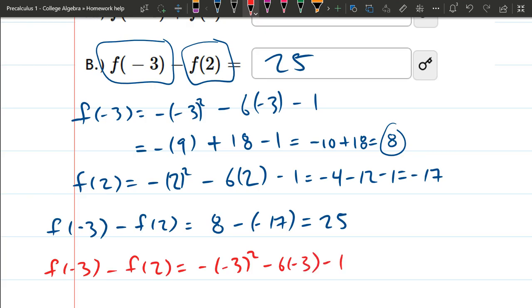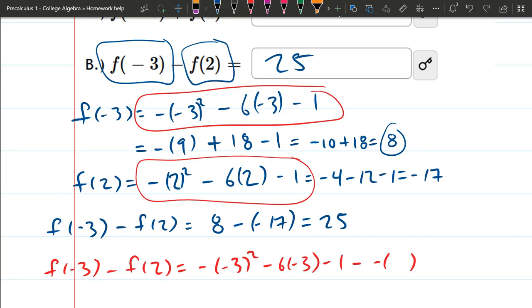So that is f of negative three. Now I'm going to go minus, and then I'll use this version of f of two. So I use this version of f of negative three. I'll use this version of f of two. I don't know why I keep putting an extra minus sign in front of that two, minus six times two minus one.